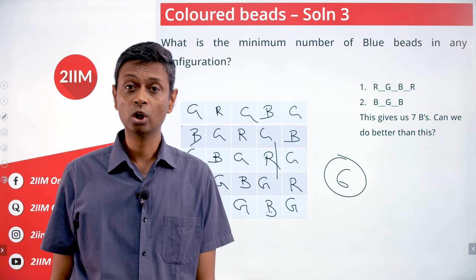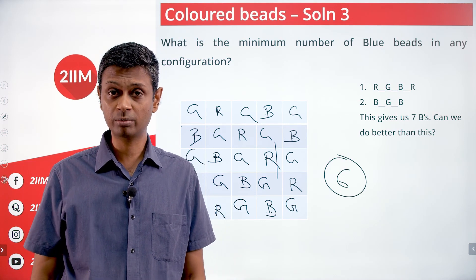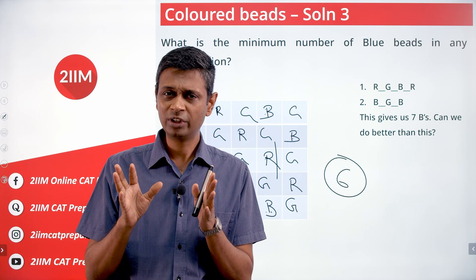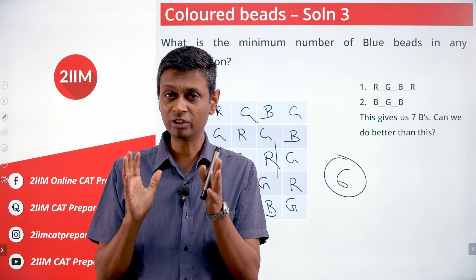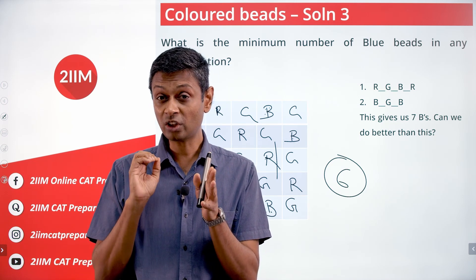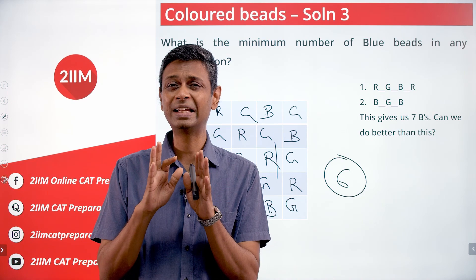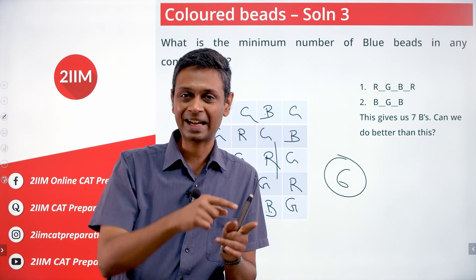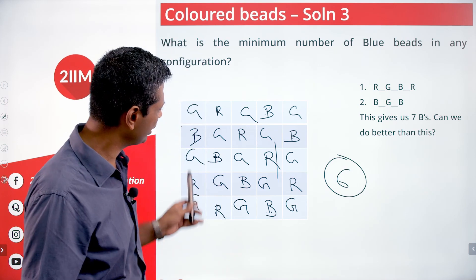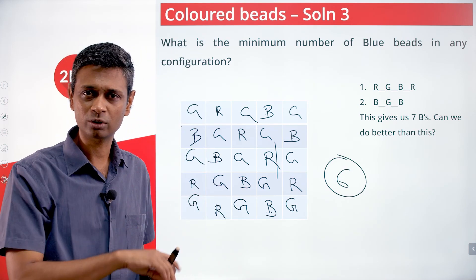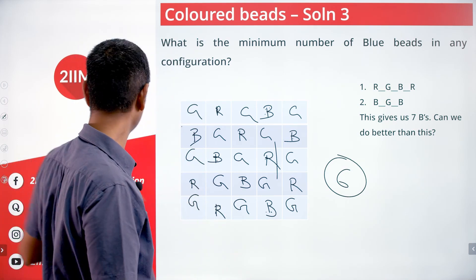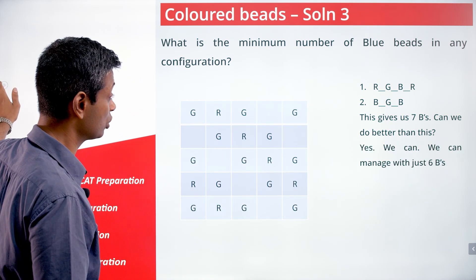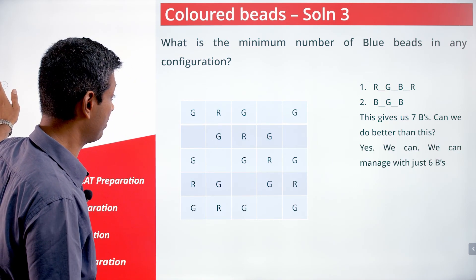We cannot achieve fewer than six blues. Starting with nine reds gave seven blues; starting with 13 greens and six reds gave six blues. It's not possible to get seven reds in after placing 13 greens. So six blues is the minimum — the best case scenario — and the answer to the minimum number of blue beads.